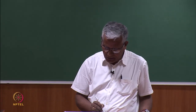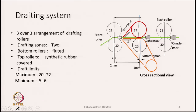In this slide, we are showing the cross-sectional view of a simple drafting unit where we have three pairs of rollers. This is known as a 3-over-3 arrangement — a back pair, a middle pair, and a front pair of rollers. When you have three pairs of rollers, you have two drafting zones.